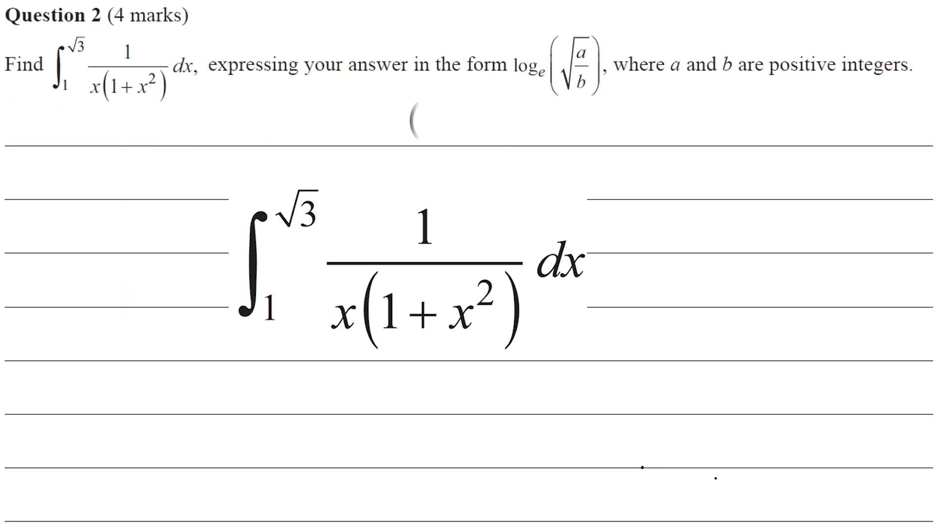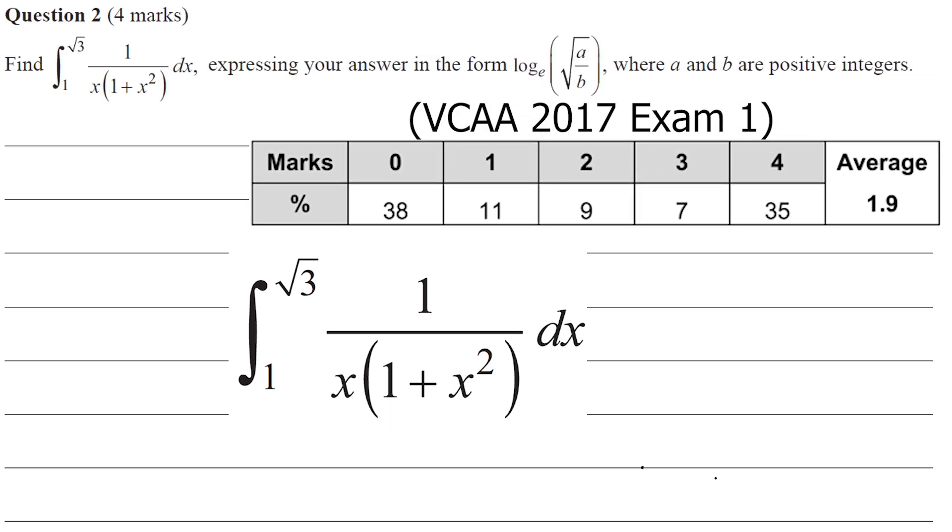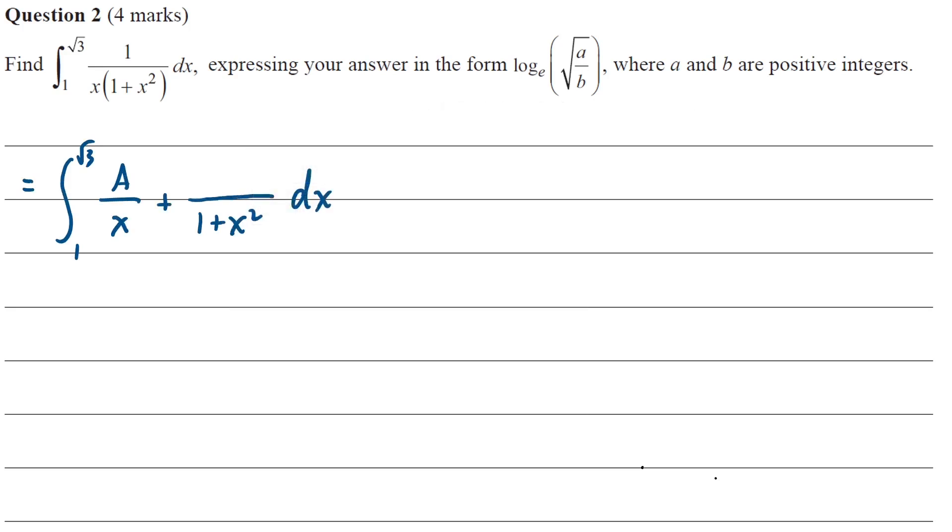The second integral is a bit harder, so fewer students were getting full marks and more students were getting zero. And it's probably because they did not set up the partial fractions correctly. We do need partial fractions for this question, a u substitution or other technique wouldn't work.